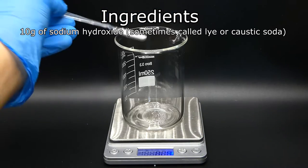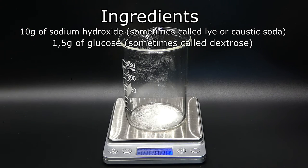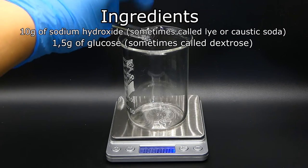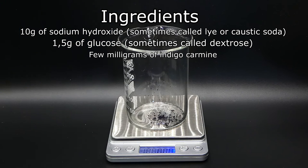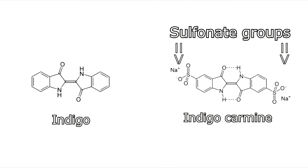Ten grams of sodium hydroxide, 1.5 grams of glucose, and a tiny amount of a dye called indigo carmine. All of these can be easily purchased from a chemical supply store. The indigo carmine is a water-soluble version of the popular dye indigo used in, for example, dyeing jeans. The indigo carmine is a little different on a molecular level, and that modification makes it safe to use as a food coloring and able to dissolve in water.